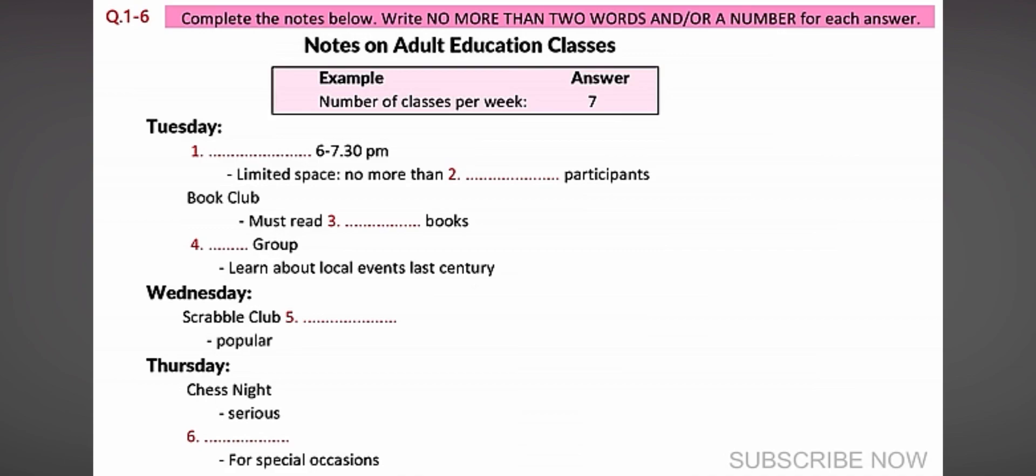On Tuesdays we have a writing workshop for those people who've always longed to write but are hesitant about putting pen to paper. It's an evening class and runs from 6 to 7:30, but there is a restriction on numbers. Yes. The tutor has advised us to restrict participants to a maximum of 10 per session, so I'll have to check and let you know if there is room for you.